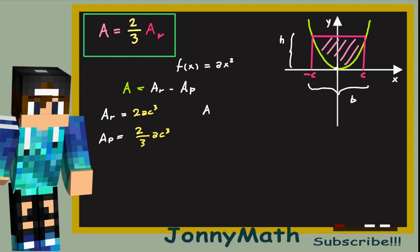So let's make the substitution. We have that the area is the area of the rectangle, so 2ac cubed minus the area underneath the parabola. So minus 2 thirds ac cubed. So this equals, and we have a denominator, 6ac cubed minus 2ac cubed. This equals 4ac cubed over 3. This equals 2 thirds times 2ac cubed.